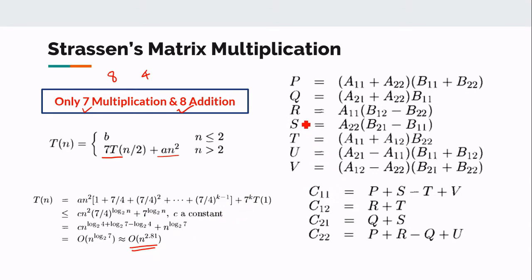Strassen proposed a way of computing C11, C12 and all the elements in the C matrix like this. C11 will be the sum of P plus S minus T plus V. So what is this P?